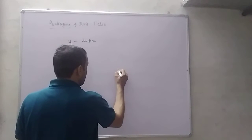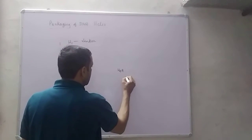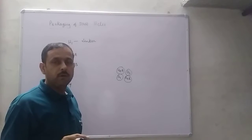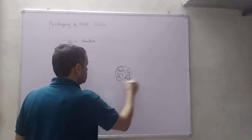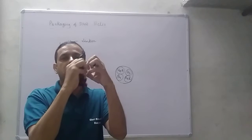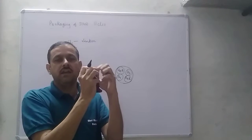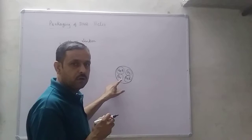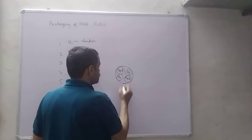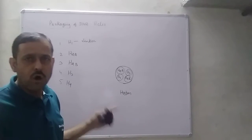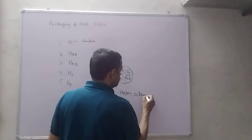अब इनमें से H2A, H2B, H3, and H4 - इनके double molecules मिलकर - यानि H2A के 2, H2B के 2, H3 के 2, और H4 के 2 - यानि 8 molecules - एक circular structure बनाती है। इसको हम कहते हैं histone octamer, क्योंकि 8 molecules हैं।